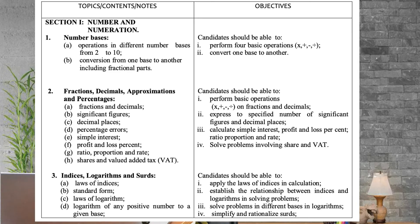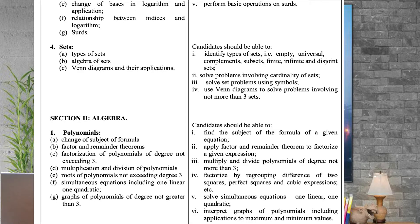The first topic in the JAMB maths syllabus is Number and Numeration. Under this section you need to know number bases, conversion of number bases from one base to another, fractions, decimals, approximations and percentages, indices, logarithms and surds, and sets. That covers the first part of the JAMB syllabus — Number and Numeration.